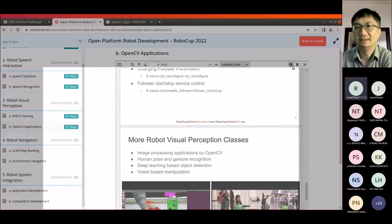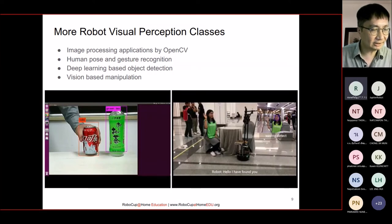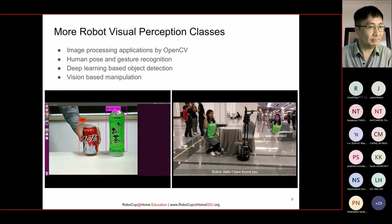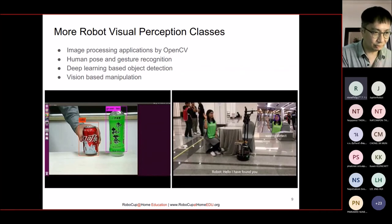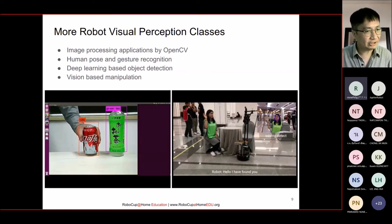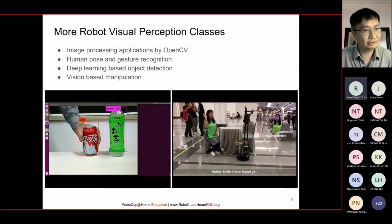There are actually many more visual perception topics we can continue with. OpenCV is very powerful and there are a lot of algorithms and applications available. For example, human pose and gesture recognition — detecting waving, raising a hand, or giving a certain sign. We can use many algorithms to do this detection. We also have deep learning-based object detection, like YOLO for object detection. This information can also be integrated with a robot arm for visual-based manipulation — the arm captures something based on what it sees, and we can measure distance and get the shape of objects, which is very useful for manipulation planning.